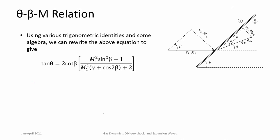After trigonometric and algebraic simplification, the result is written explicitly for tan θ: tan θ = 2 cot β · [M₁² sin²β − 1] / [M₁²(γ + cos 2β) + 2]. This is the theta-beta-M relation. From this relation, if you know M₁ and β you can easily find tan θ. The relation is not simple — expect nonlinear behavior.